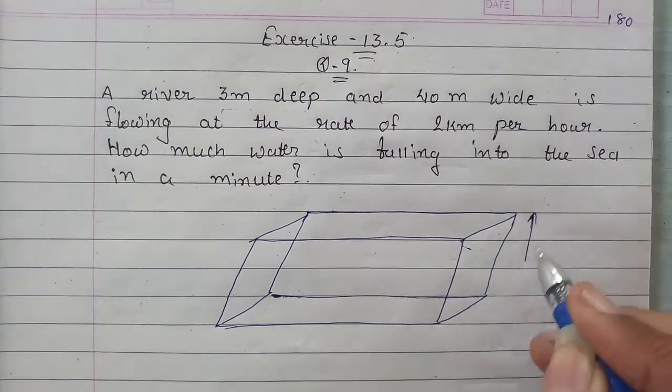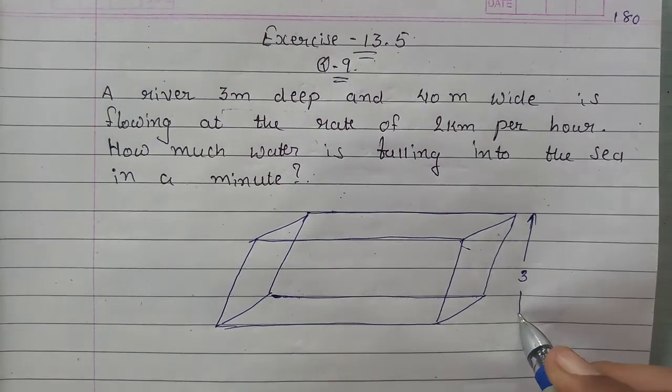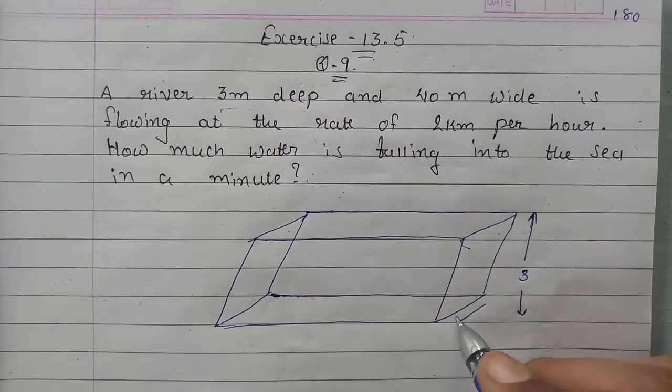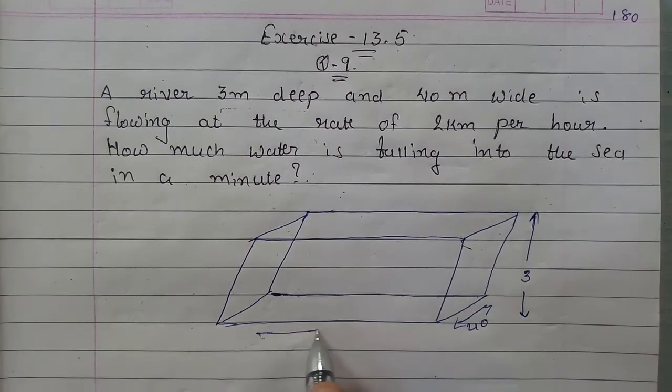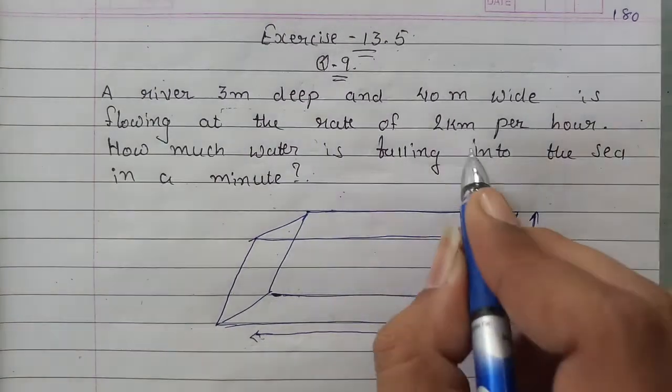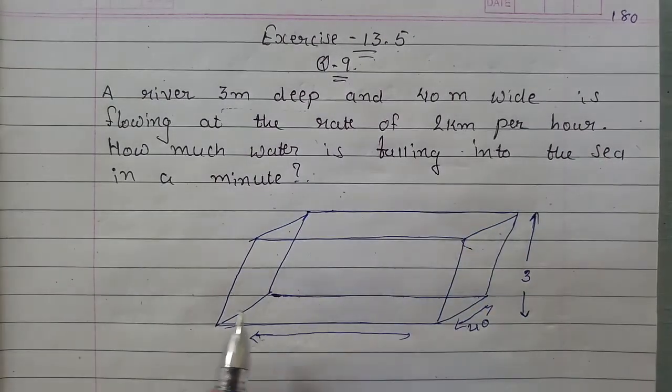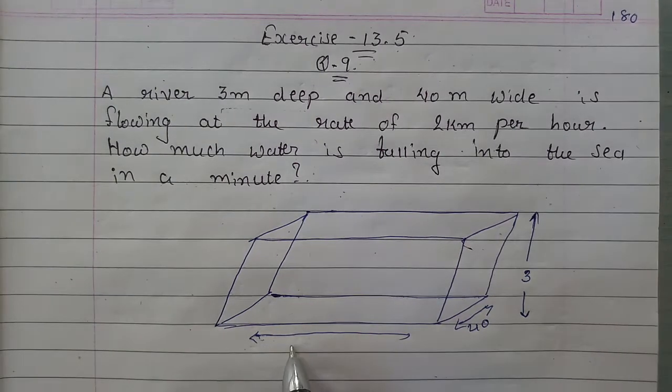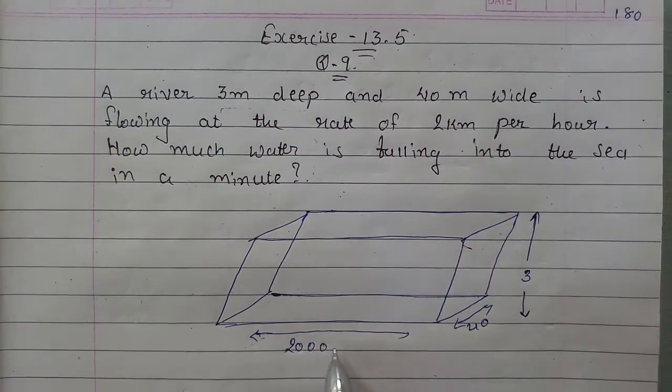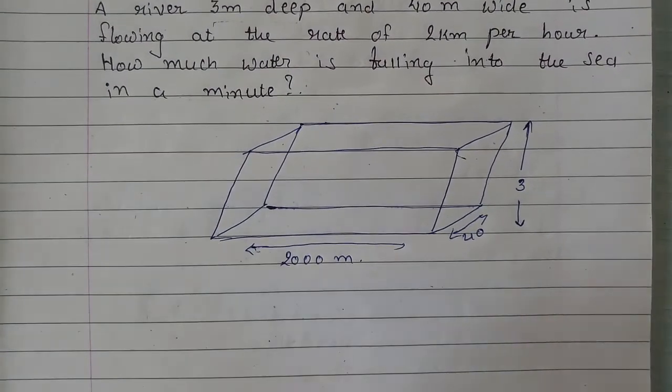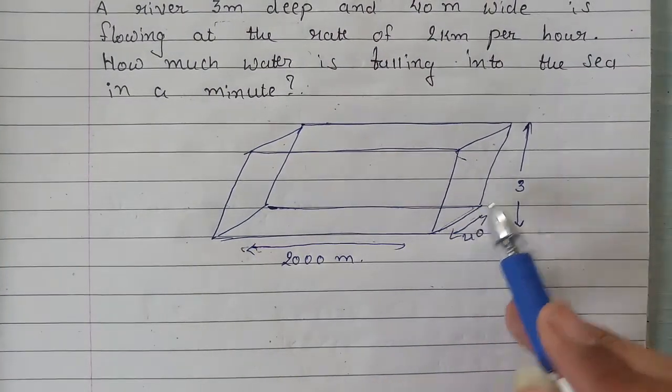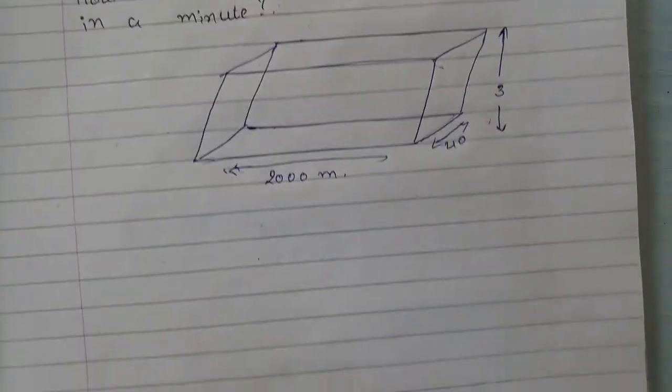Its depth is given as 3 meter. Then its width is given as 40 meter, and length is 2 kilometer per hour. That means this river will flow for 1 hour, so its length will be 2000 meter. That means for the cuboid, length is 2000, width is 40, and height is 3.